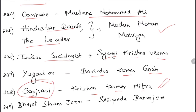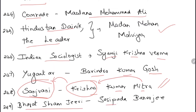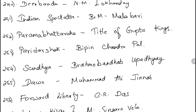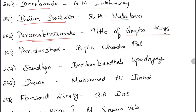Independent was written by Motilal Nehru. Free Hindustan by Taraknath Das. Al-Balagh and Al-Hilal were written by Maulana Abul Kalam Azad. Comrade was written by Maulana Muhammad Ali. Hindustan Dainik and The Leader were written by Madan Mohan Malaviya. Indian Socialist by Shyamji Krishnavarma. Yugantar by Barindra Kumar Ghosh. Sanjeevani by Krishna Kumar Mitra. Bharat Shram Jeevi by Sasipada Banerjee. Deenbandhu by L.M. Lokande. Indian Spectator by B.M. Malabari.